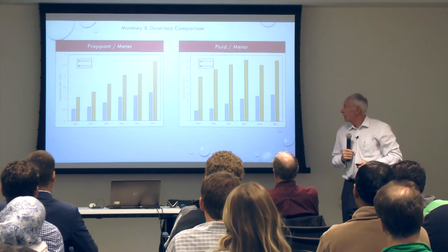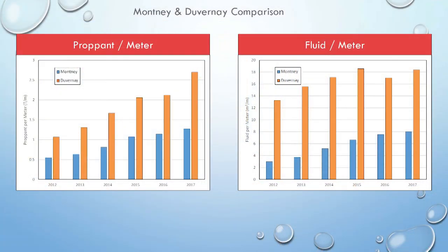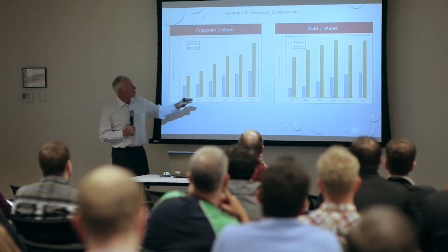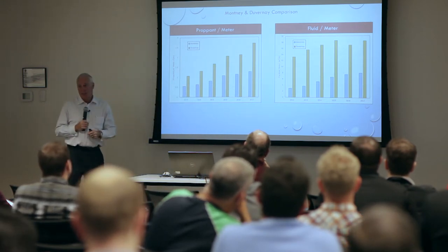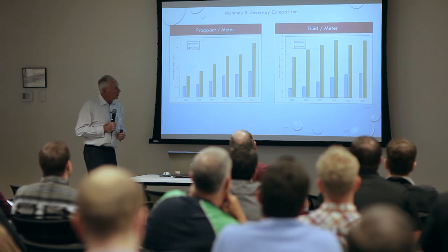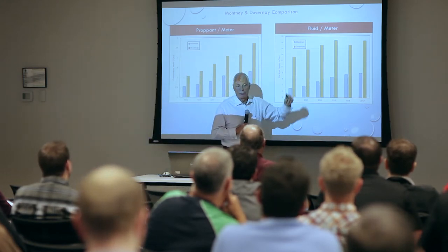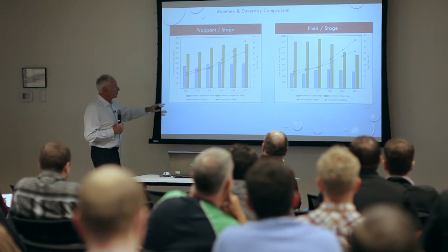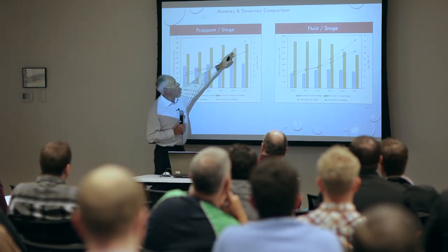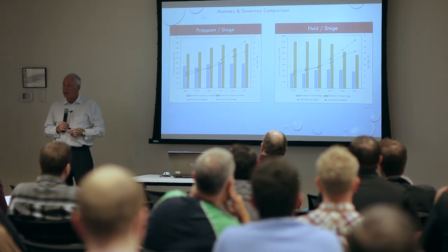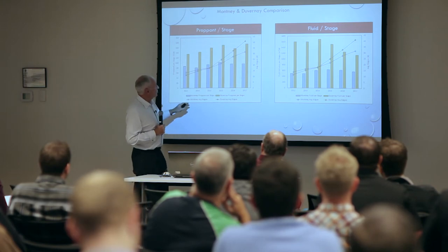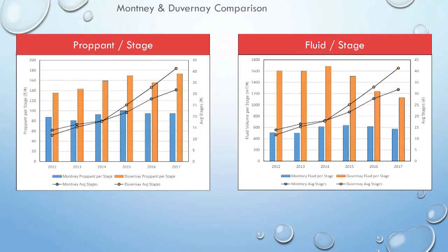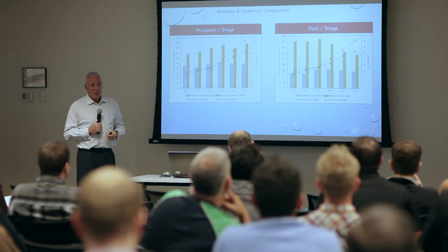Comparing Montney and Duvernay: propant per meter is trending upward for both, but Duvernay tends to have bigger fracks and uses somewhat more. Fluid per meter follows the same — more propant requires more fluid. Propant per stage is on an upward trend for both, with Duvernay higher than Montney. Number of stages is now well over 30 on average. Drilling and completion costs for Duvernay are also going down relatively constantly.